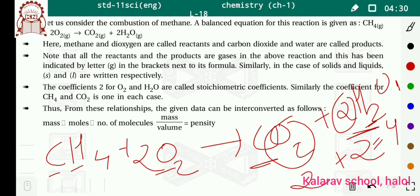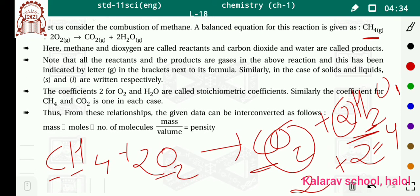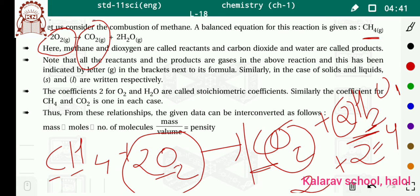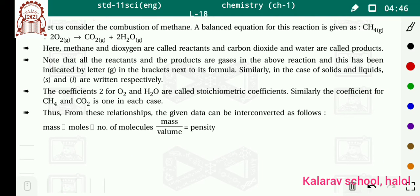Dekho, CH4 one hai, toh hamaara bhi one hai. O2 kitnay hain — two; hamaara bhi two. CO2 kitnay hain — one; hamaara bhi one. Aur two H2O, toh yahan bhi two H2O. Toh, first of all, aapko jo chemical equation hai, use balance karna padega.